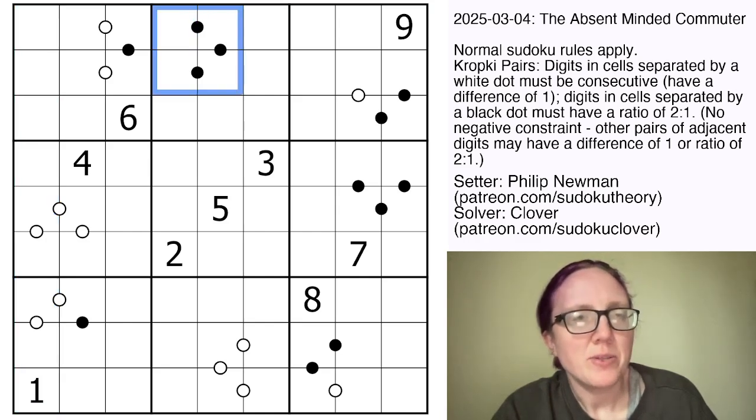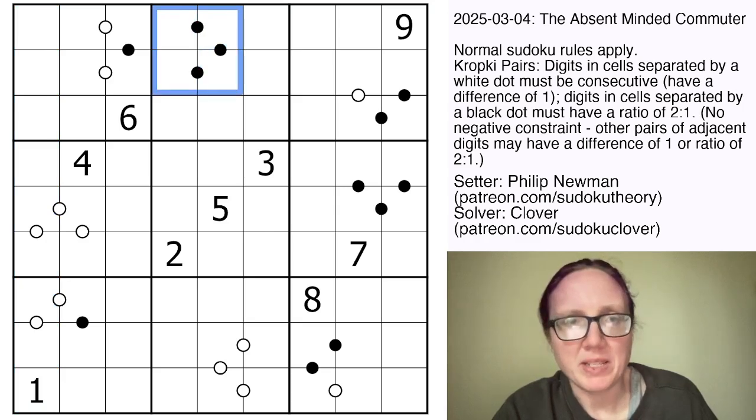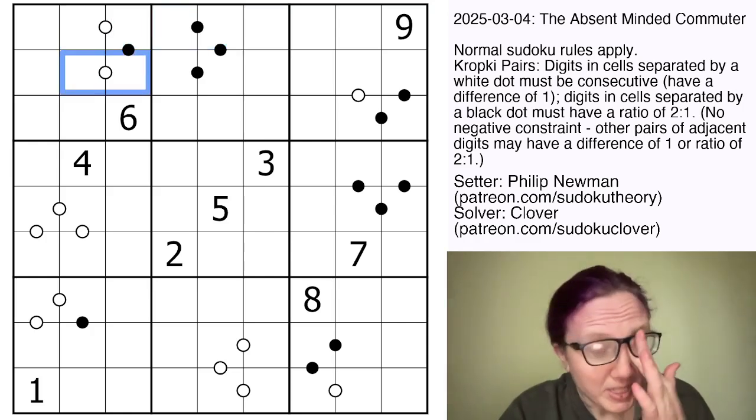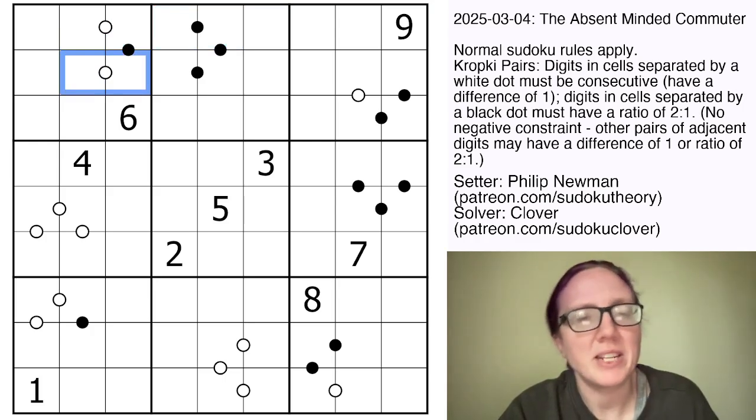When you see a black dot, the two digits on either side of it are in a 1 to 2 ratio, so one of them is twice as big as the other one, and when you see a white dot, one of them is 1 greater than the other one, so they are consecutive, for instance 2 and 3, or 4 and 5, or 7 and 8, anything like that.